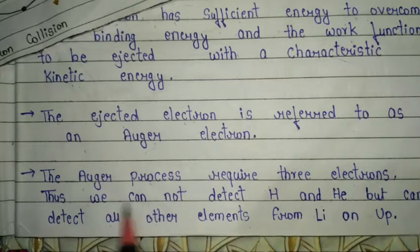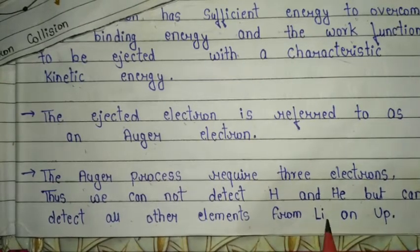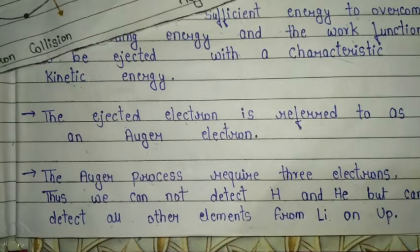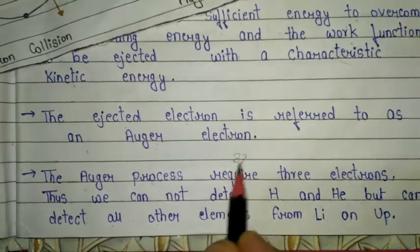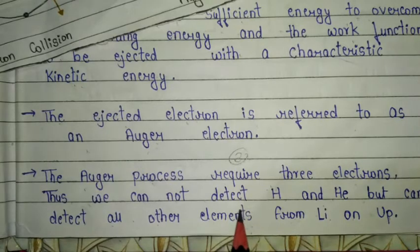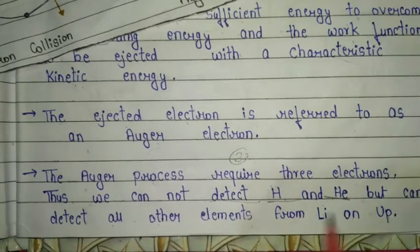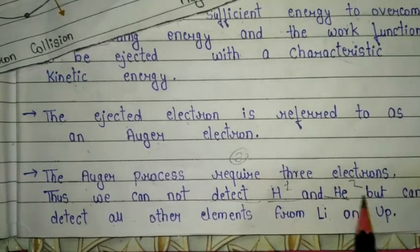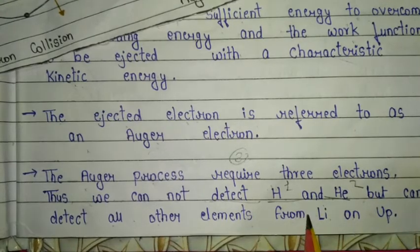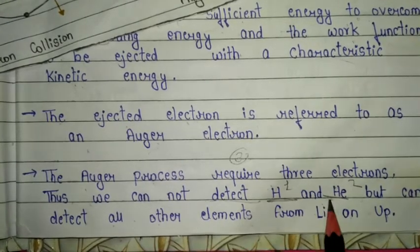The Auger process requires three electrons. Therefore, we cannot detect hydrogen or helium using this process — hydrogen has one electron and helium has two electrons — but we can detect all other elements from lithium onwards.